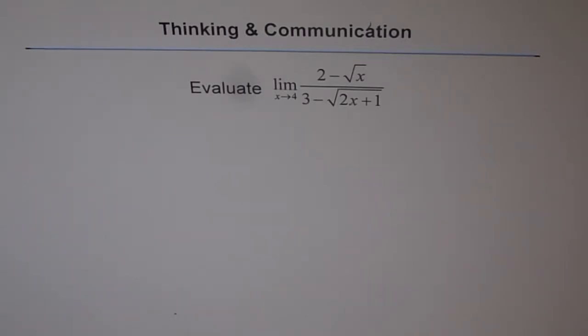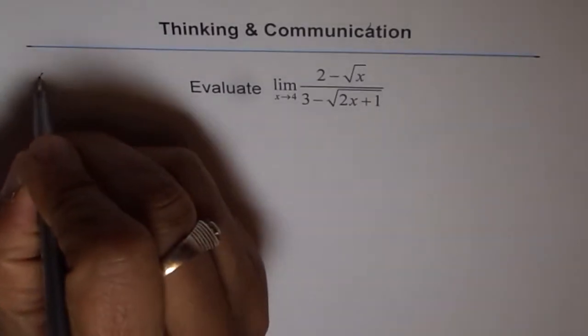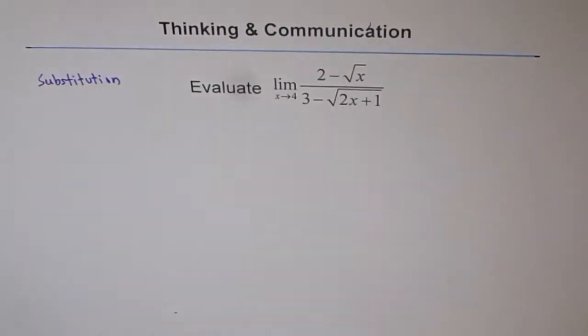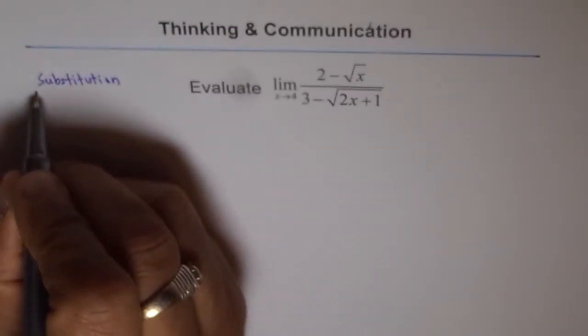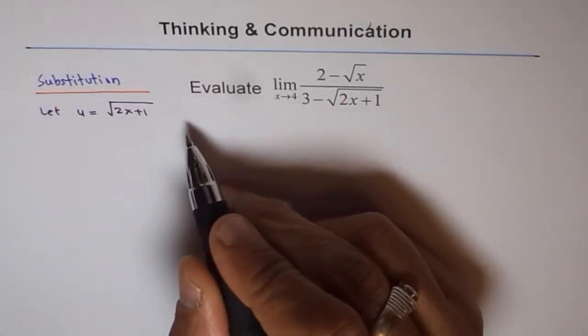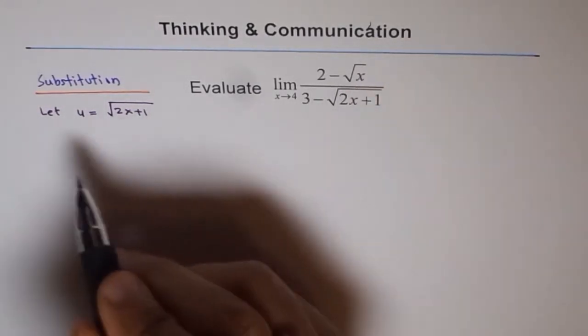We will follow the method of variable substitution here. The complicated part in this equation is square root of 2x plus 1. Let us figure out what that square root of 2x plus 1 is. Let u equal to square root of 2x plus 1. We need to find what square root x is in terms of u; otherwise, we cannot handle the square root x term.